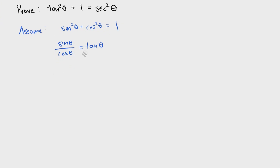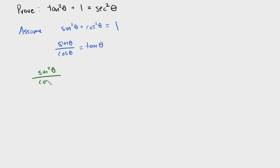Simply, we're going to take this equation right here and multiply everything by one over cosine squared theta. So we're going to take sine squared theta and multiply that by one over cosine squared theta, plus cosine squared theta over cosine squared theta, and that's going to equal one over cosine squared theta.